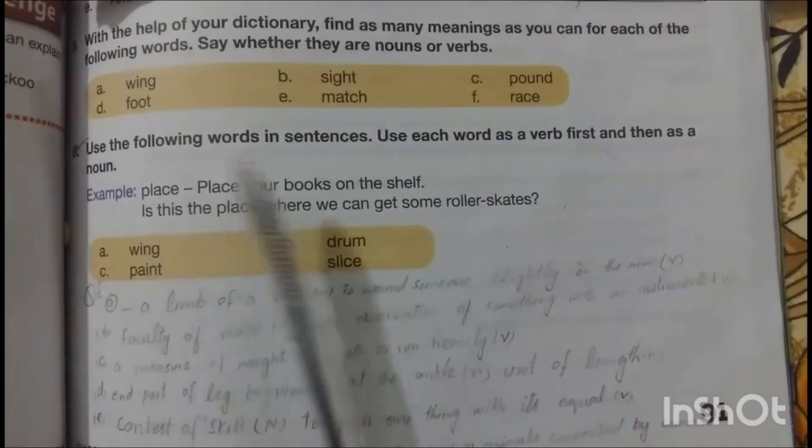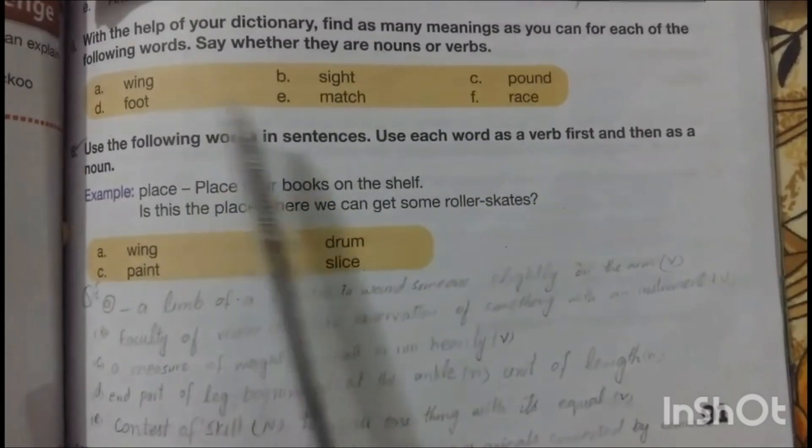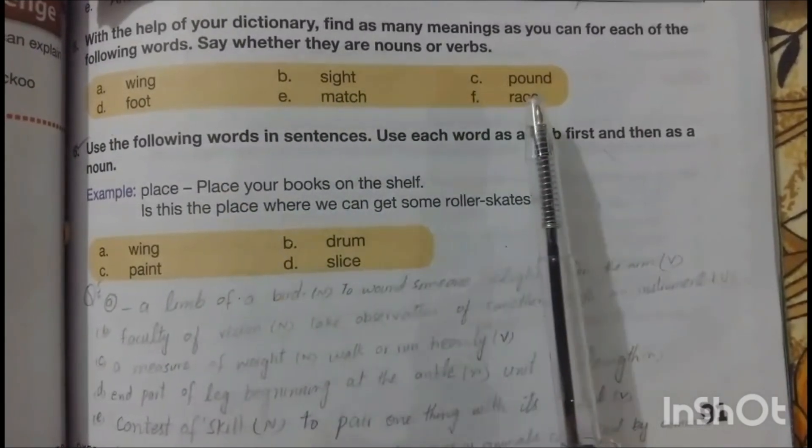The words given are wing, sight, pound, foot, match, and race.